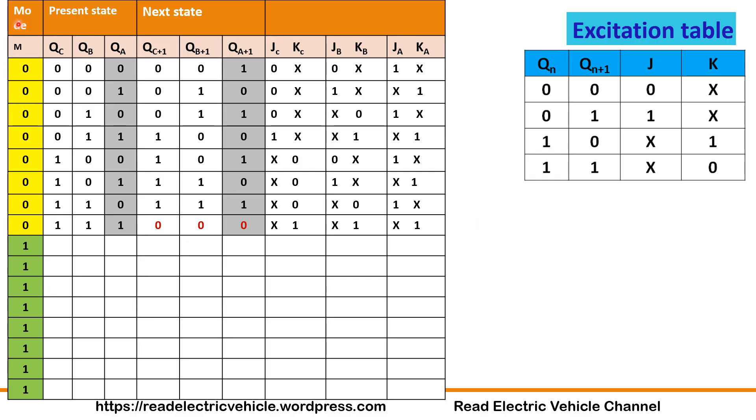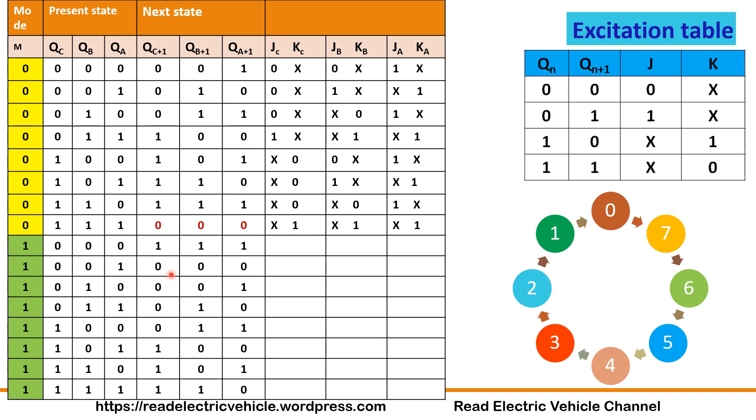Next for down counter I am taking the mode as 1, M=1. The same combination 0, 1, 2, 3, 4, 5, 6, 7. Here next state will change in the down counter. When it is 0 the next state should be 7. If it is 1, 0 is the next state. If it is 2, next state is 1. See this state diagram and write it correctly. After that, the same procedure to fill up the input combinations.